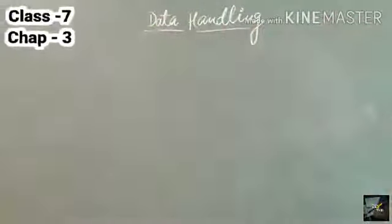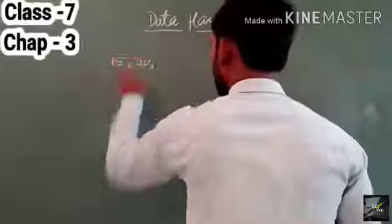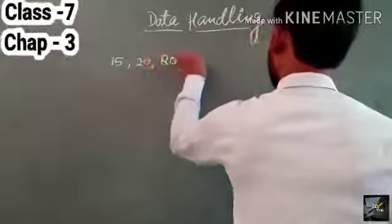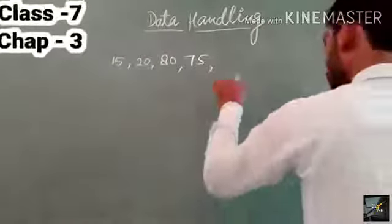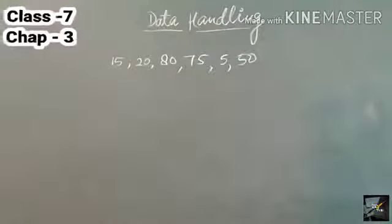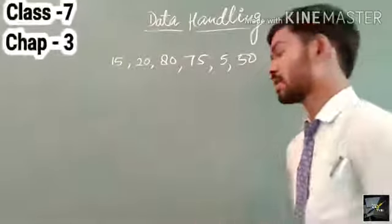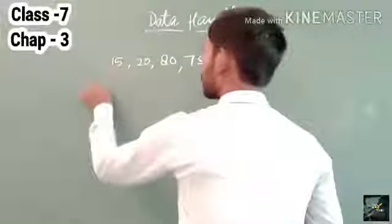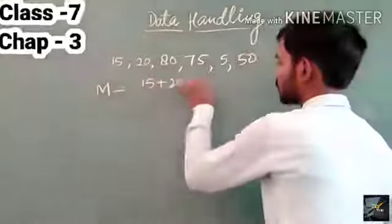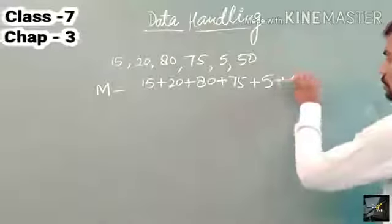The next question is: find the mean of 15, 20, 80, 75, 5, and 15. We know that mean equals the sum of all data. So we write: mean = 15 plus 20 plus 80 plus 75 plus 5 plus 15.